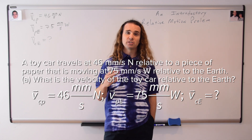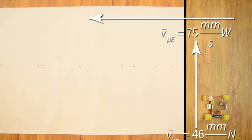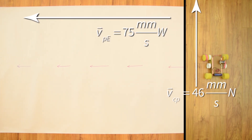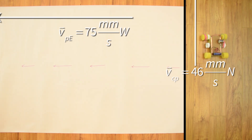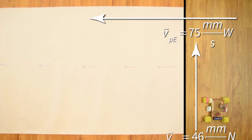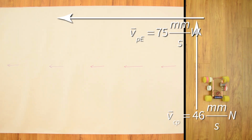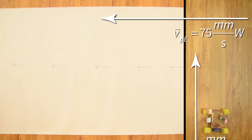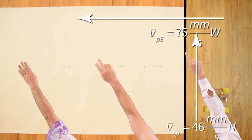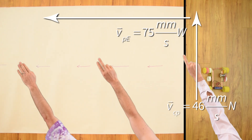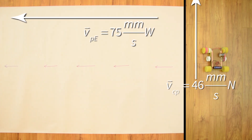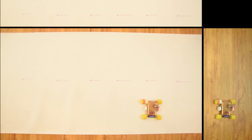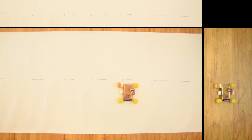Great. Now, let's take a moment to visualize the problem. We know the car moves at 46 millimeters per second north with respect to the paper. In other words, if the car were not on top of the paper, it would simply travel northward. And the paper is moving at 75 millimeters per second westward. Please take a moment and point in the general direction you think the car is going to move when we place it on the paper. You are all correct. It should move in a direction somewhere between north and west. Let's put the car on the paper and see what happens. And you can see that we are correct — the car moves somewhere between north and west.